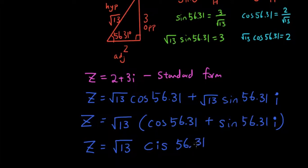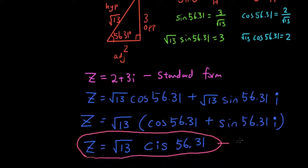So cis: the C represents cos, the S represents sin, and the I represents the imaginary number. So that is simply what those three letters mean. And this final result here is what we call polar form.